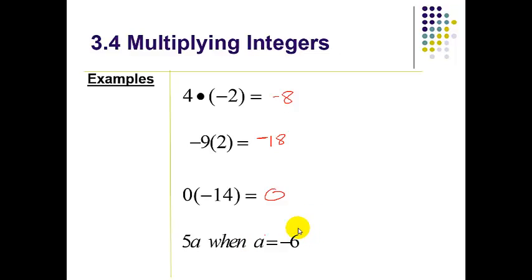Why negative 6? Because that's what the problem told us to do. So here we go: 5 times negative 6. And whenever you substitute in for a variable, you want to put a parenthesis there. So 5 times negative 6—different signs—negative 30. And that's it, ladies and gentlemen.